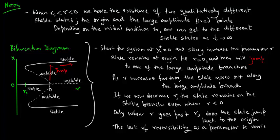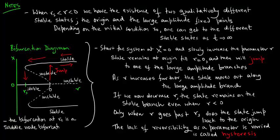So this lack of reversibility can now be seen in the bifurcation diagram. The bifurcation at r equals rs is a saddle node bifurcation. Stable and unstable fixed points are created as the parameter r is increased.